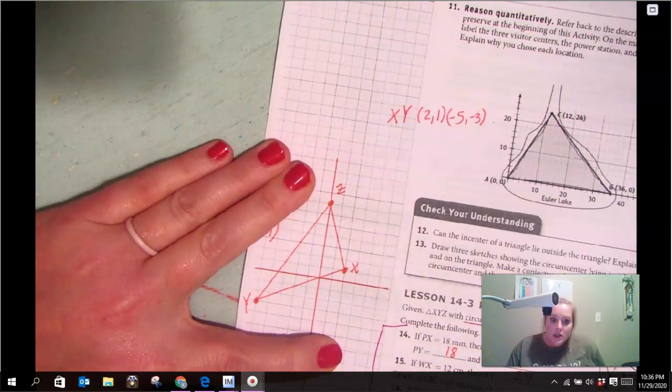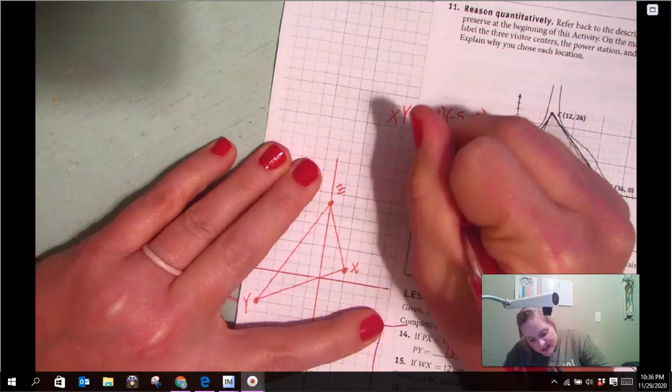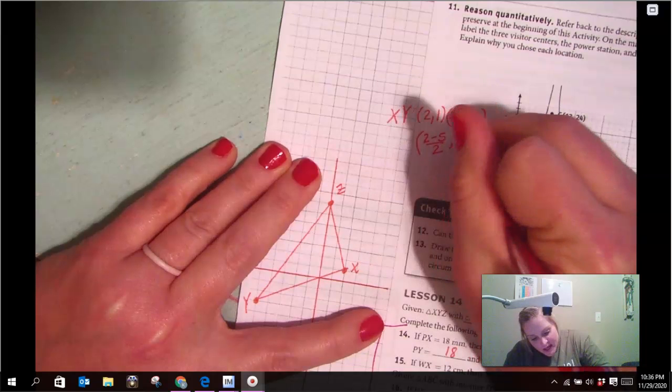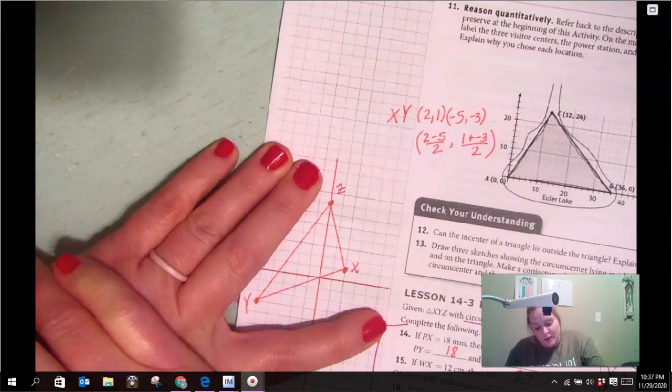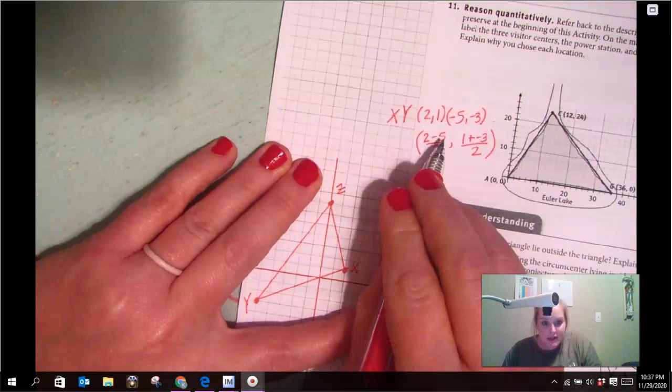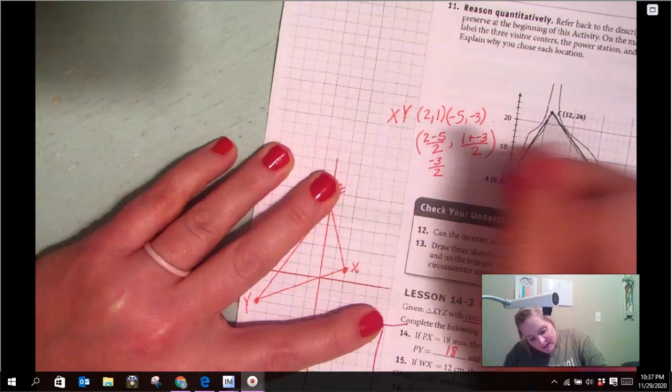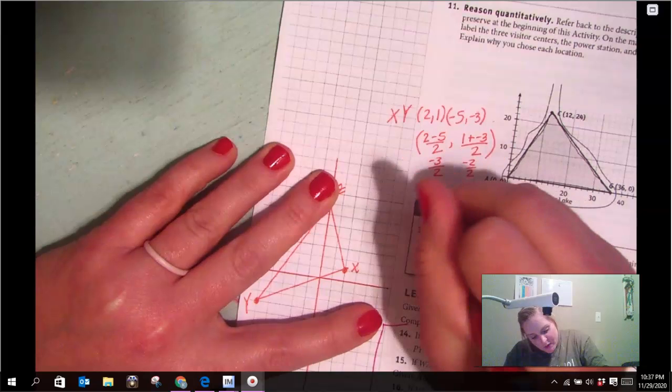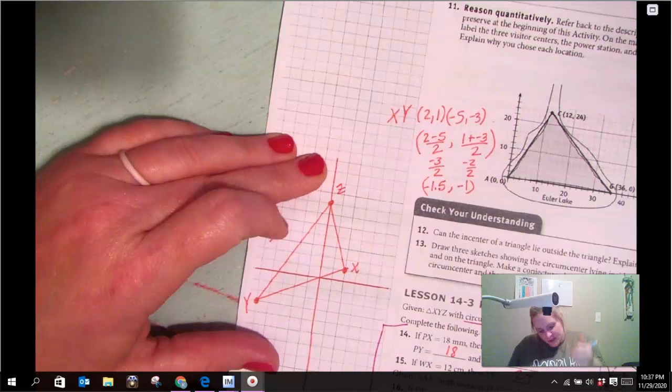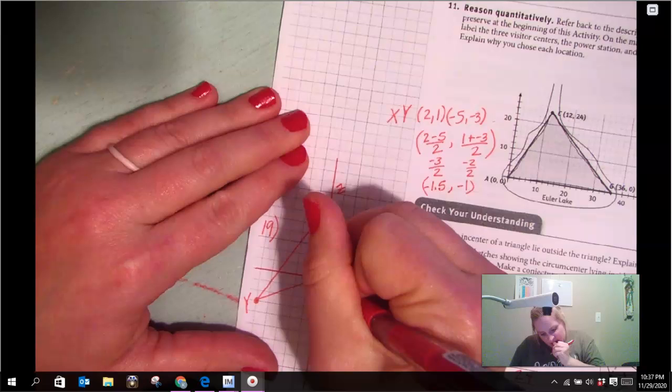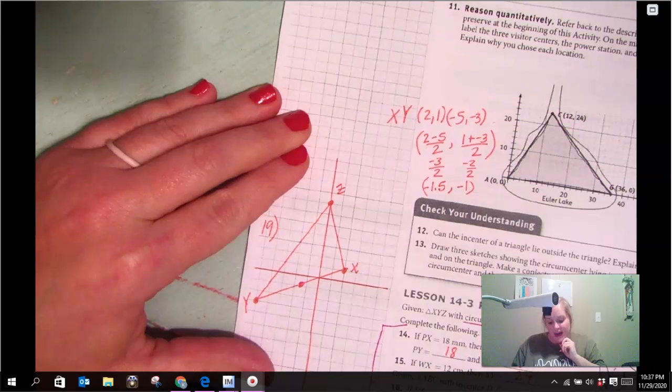So what I'm going to do to find the midpoint is I'm going to take my x's and add my x's, divide by 2, take my y's, add them, divide by 2. So this is going to be negative 3 over 2, and this one is negative 2 over 2. So this is really (-1.5, -1). So that's the midpoint for XY.